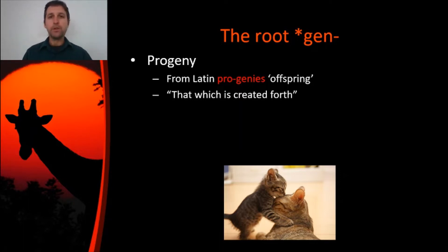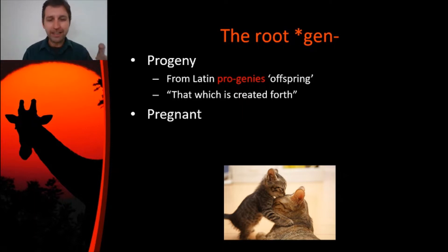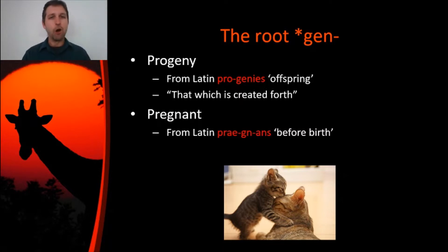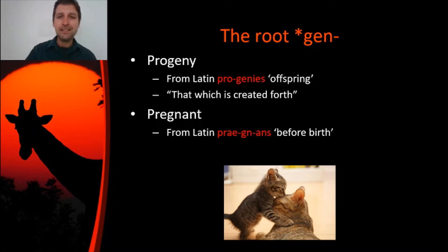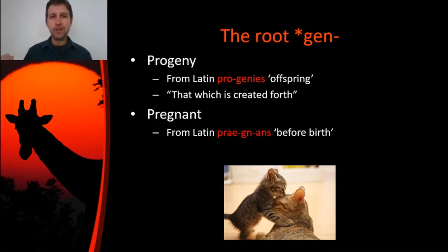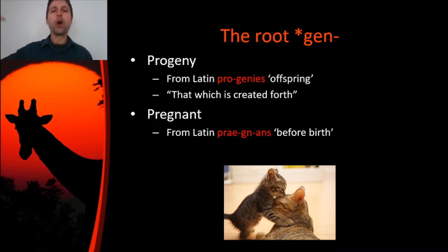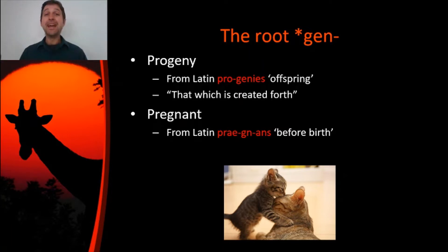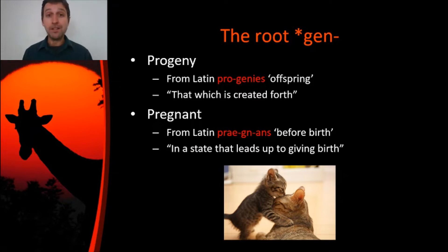Another word that comes from the root Gen that has to do with giving birth is pregnant. The Gen is disguised a little bit in pregnant — you can see the G-N there in the middle, but the E has gone missing. That goes all the way back to Latin, because it comes from Latin pragnans. Prai means before, sometimes we see it in the form pre. So pragnans means before birth, and the birth is the gn part where the E has fallen out. That's really all pregnant means — you are in a state that hopefully will lead up to giving birth.